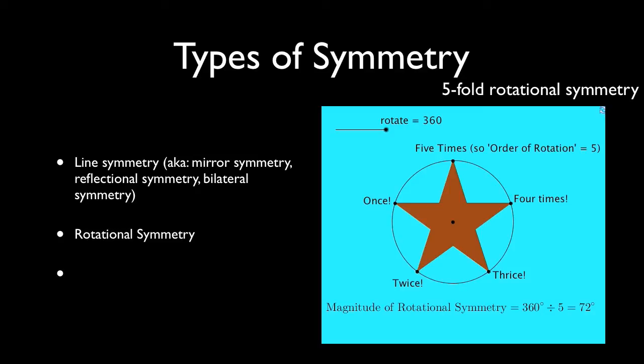The magnitude of rotational symmetry is 72 degrees. 72 degrees means if I rotate 72 degrees, then the image will look the same as the preimage. You'll probably want to write that down. Magnitude of rotational symmetry is 360 degrees divided by the order of rotation.